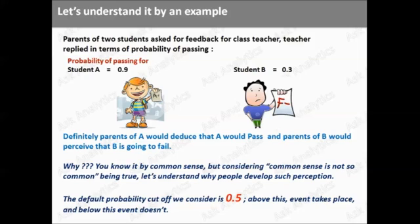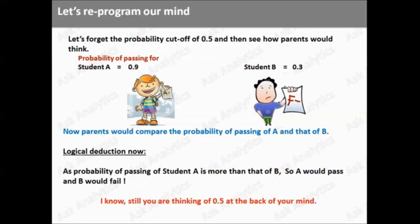Let's forget this cutoff of 0.5. Suppose we don't know there is a cutoff of 0.5. Just think. Let's reprogram our mind with the assumption that there is no cutoff of 0.5. Now, when teacher told the probability of passing of student A is 0.9 and that of student B is 0.3, we compare the probability of these two students. And we say, as the probability of student A is more than that of student B, probability of passing 0.9, then we can deduce student A will pass and student B will fail.